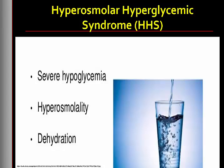Hyperosmolar hyperglycemia syndrome (HHS) is a life-threatening syndrome that can occur in a patient with diabetes who is able to produce enough insulin to prevent DKA, but not enough to prevent severe hyperglycemia, osmotic diuresis, and extracellular fluid depletion. HHS is less common than DKA and often occurs in patients older than 60 years with type 2 diabetes. Common causes include urinary tract infections, pneumonia, sepsis, any acute illness, and newly diagnosed type 2 diabetes.